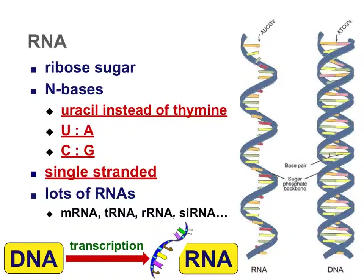As a review, RNA has some similar characteristics to DNA but also specific differences. For the nitrogenous bases, there is a substitution of uracil instead of thymine. So if you see a T in a nucleic acid sequence, you know it's DNA; if you see a U for uracil, you know it's an RNA strand. RNA is single-stranded, typically shorter than the millions of base pairs in a DNA molecule, and there are different types of RNA.